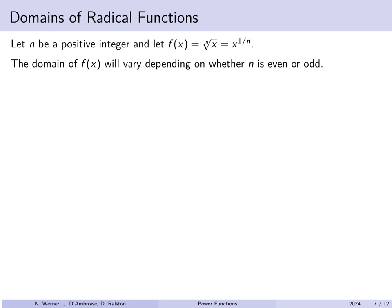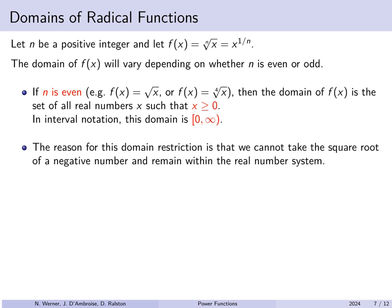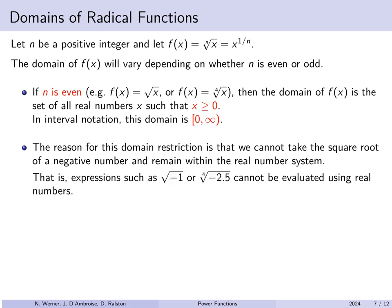The domain of x^(1/n) — the nth root of x — depends on whether n is even or odd. If n is even (e.g., square root, fourth root), the domain is all non-negative real numbers, [0, ∞), since you cannot take the square root of a negative number in the real numbers. For example, √(-1) or the fourth root of -2.5 are not real numbers.